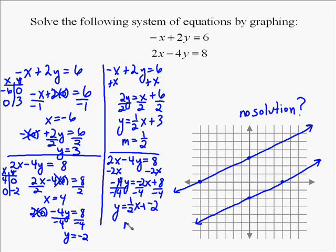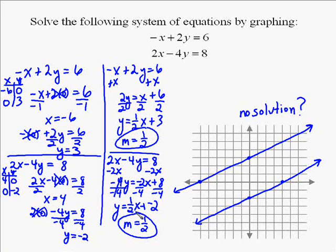So these two equations have the exact same slope, but different intercepts, y-intercepts, thus they are parallel. Since they don't meet, parallel lines mean your answer is no solution.